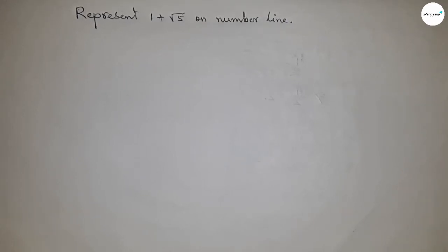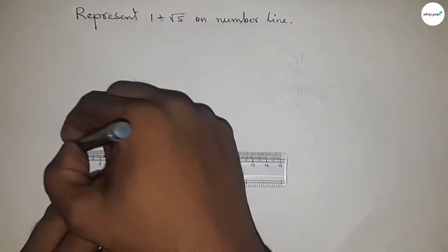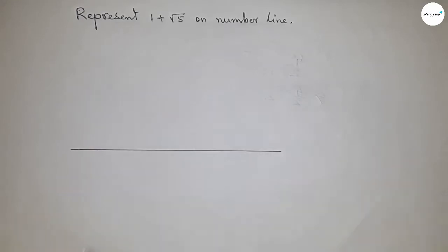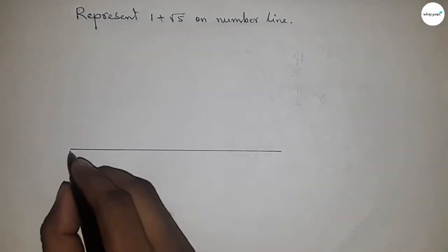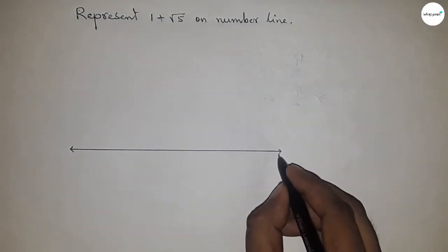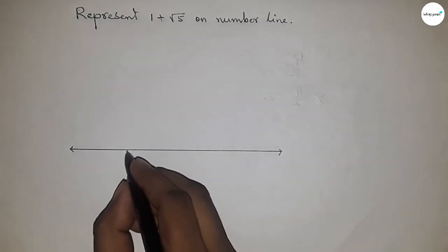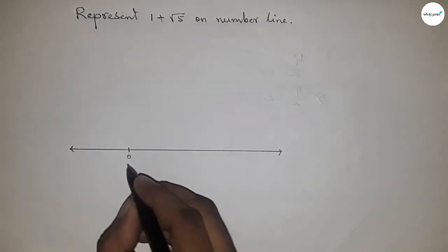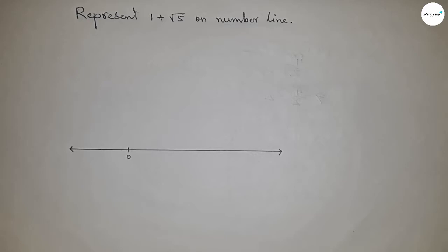First of all, let's draw the number line. Draw a line of any length and mark the ends with arrows. Next, take the starting number zero. We'll mark the numbers on the line using a compass.